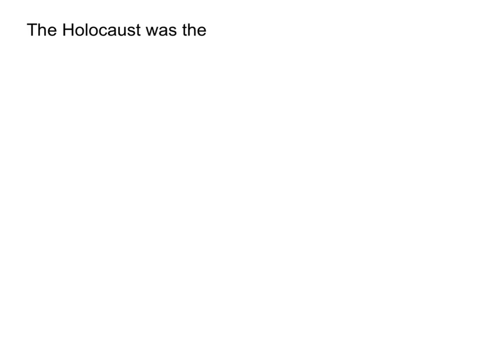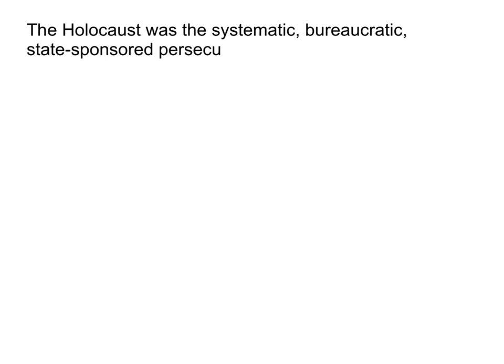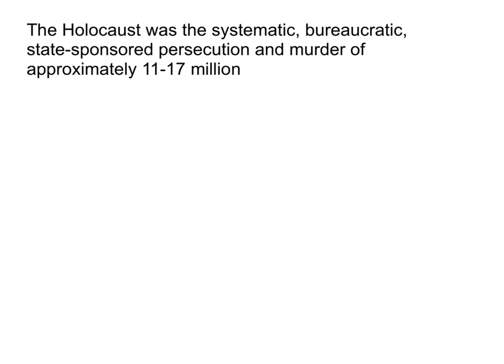Importantly, the Holocaust was the systematic, bureaucratic, and state-sponsored persecution and murder of approximately — and this is where numbers get tricky — we can definitely pinpoint the amount of Jewish people, which is about six million, but the numbers vary after that, so we'll say roughly 11 million people by the Nazi regime and its collaborators.